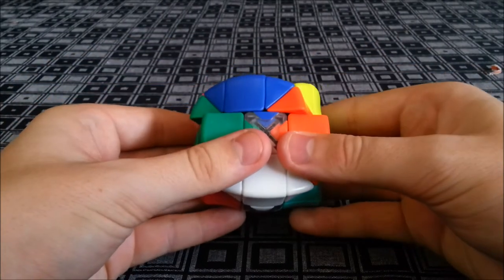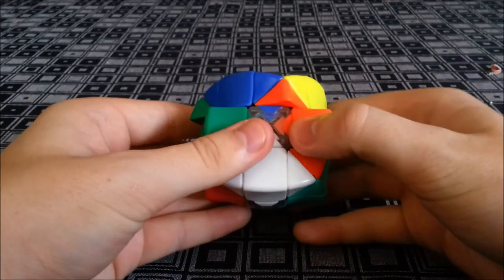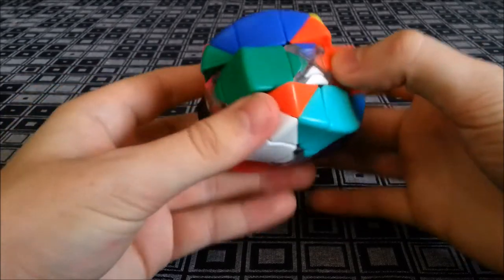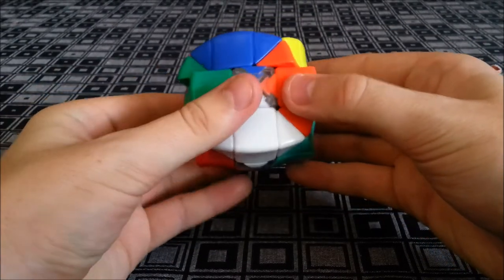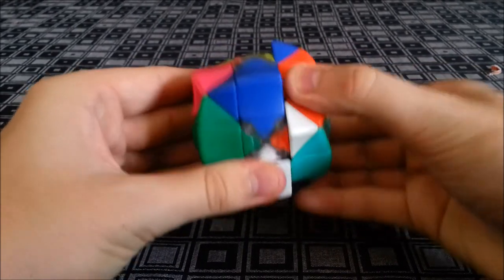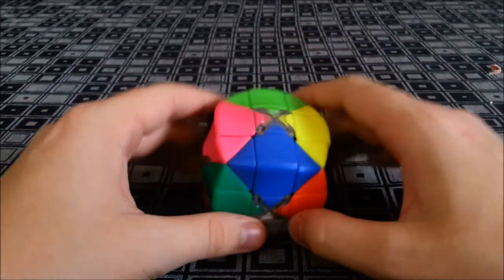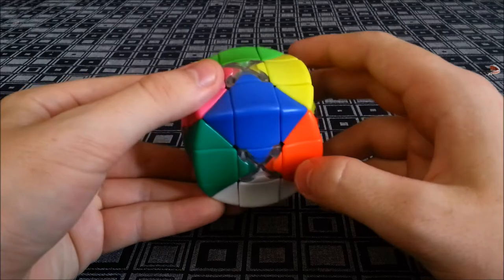With corner cutting, as I said it's not a speed cube so it doesn't corner cut that well. It can't even corner cut one piece. If we go a bit below one piece, it can kind of do that with some force. It just doesn't really corner cut. This is not a cube meant for speedcubing.